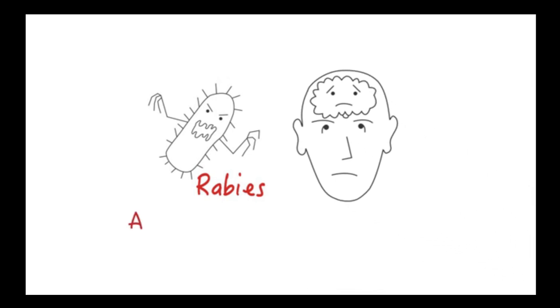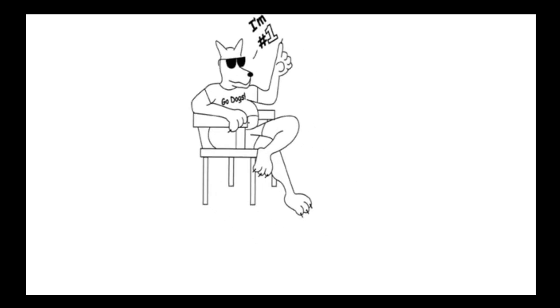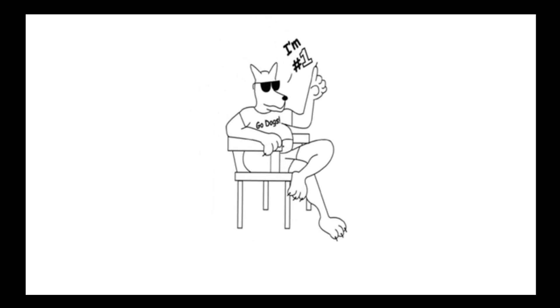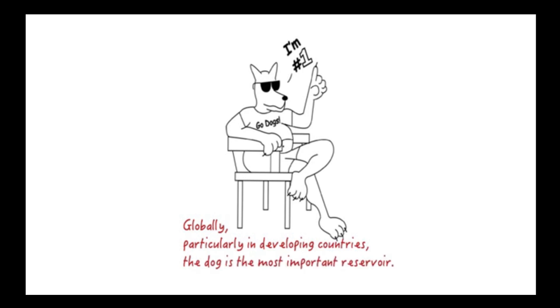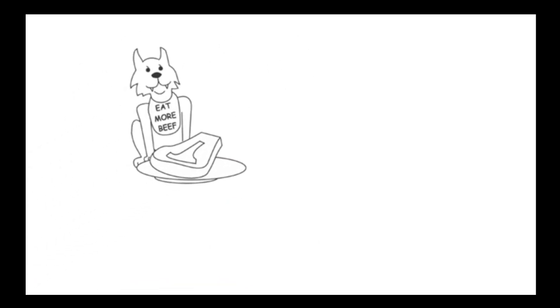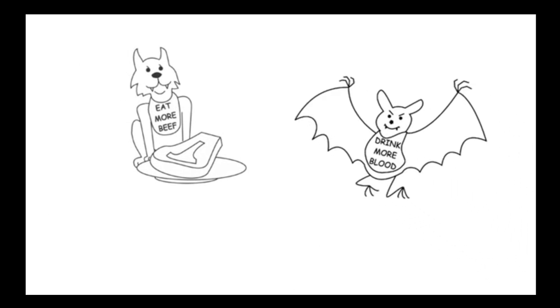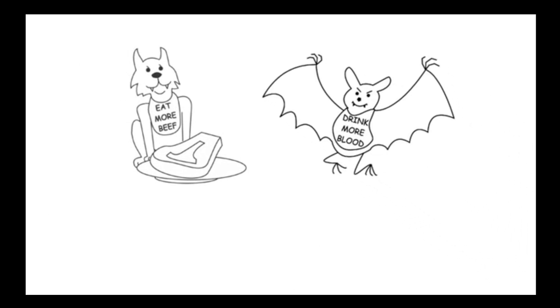Rabies is an acute progressive viral encephalitis that principally affects carnivores and bats, although any mammal can be affected. Around the world, the dog is the most significant reservoir of this virus, particularly in developing countries. Generally, the name of the mammalian species acting as a reservoir and vector is used to describe the type of rabies from an epidemiological standpoint.